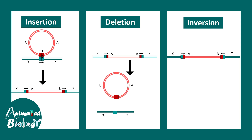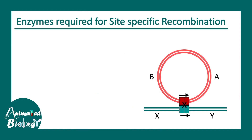There could also be inversion — you can see these sequences in the form of A and B, and due to inversion their orientation can be changed. All of these outcomes — insertion, deletion, and inversion — can possibly happen in site-specific recombination.